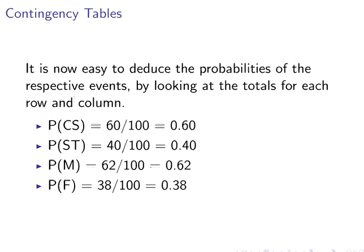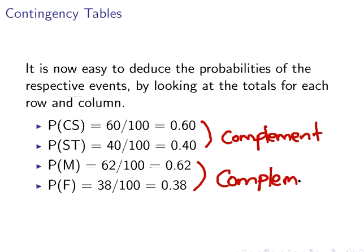It is now easy to deduce the probability of each respective event just by looking at those totals. The probability that a randomly selected student studies computer science is 0.60, statistics is 0.40, male is 0.62, and female is 0.38. As a quick remark, male and female are complement events, and similarly computer science and statistics are also complements — meaning both pairs add up to one.